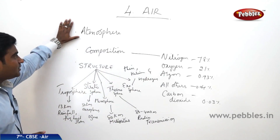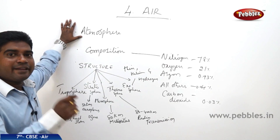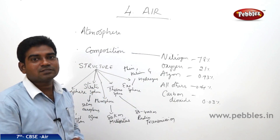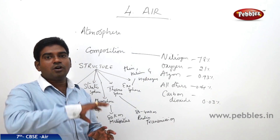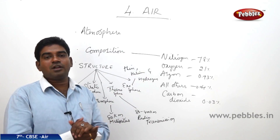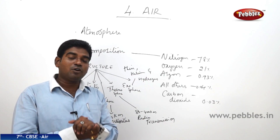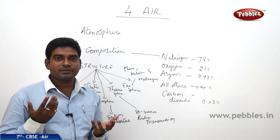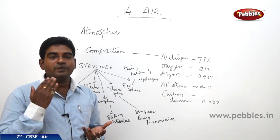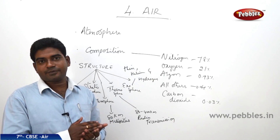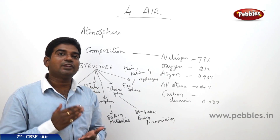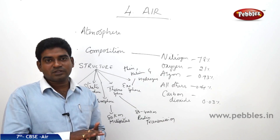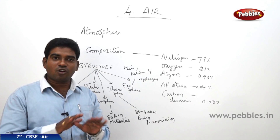First, what is atmosphere? The blanket of air which surrounds the entire earth is known as atmosphere. The entire air on this planet together is called atmosphere. Atmosphere consists of the gases which we require to breathe. So without air, we cannot survive on this planet. Air plays a very vital role in every human's life.